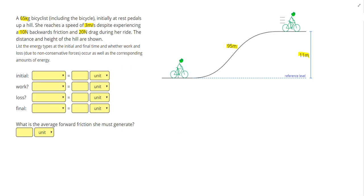Let's start off by identifying what type of energy that she has at each time. At the initial time, she's at rest, so no kinetic energy, and she's not above the reference level. So she actually has no energy at the initial time. So for initial, I'm going to write none and zero joules. At the final time, she's reached the top of the hill, so she's above the reference level, giving her a gravitational potential energy, and she's also moving, so she's going to have kinetic energy.